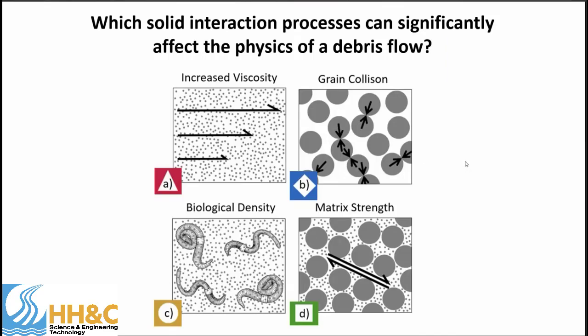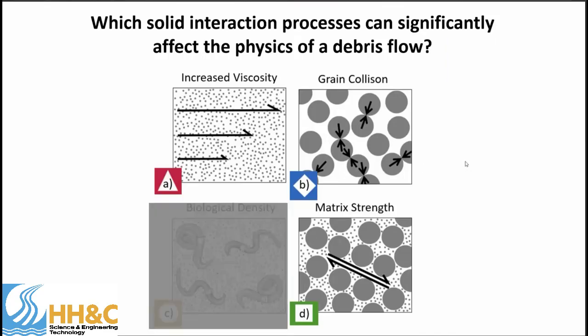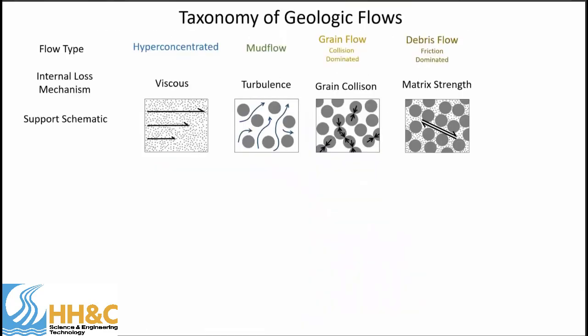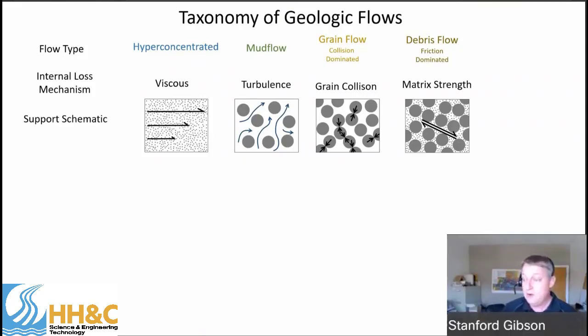The answer was almost all of them — I added 'biological density' as a cheeky distractor. It doesn't really matter how many worms you have in your debris flow, but all the other things matter. That's part of the problem: 'debris flow' is a word with semantic range. Of the 136 people on this call, there are probably 7 to 12 different definitions. Large woody debris is the first thing that comes to mind for some, but the technical definitions are different.